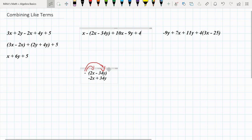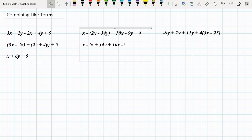So let's use that in the expression up there. So up here we would write x minus 2x plus 34y plus 10x minus 9y plus 4. If you want to, if it helps you, you can use the brackets like that.